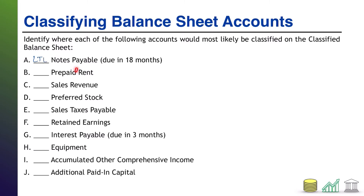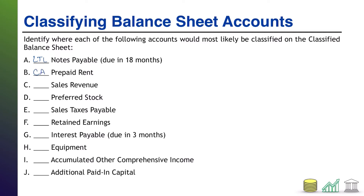Next up: prepaid rent. A prepaid is something that you have paid for in advance — someone owes you something, therefore that's an asset to you. That's something of value to you. And you typically don't pay more than a year ahead of time, therefore this would be a current asset.